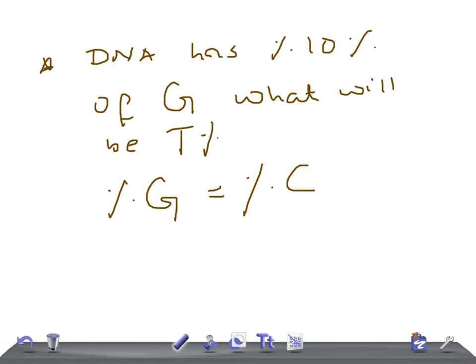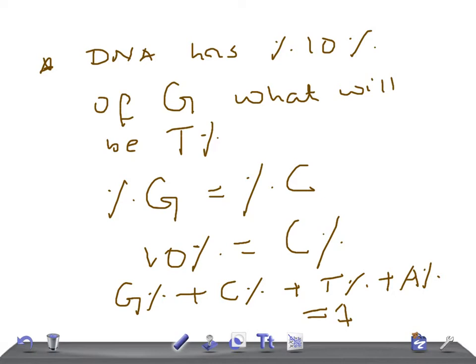So, the percentage of G they have given is 10%, so the percentage of C is nothing but 10%. Now, as we know, the total percentage, that is the percentage of G plus percentage of C plus percentage of T plus percentage of A equals 100%.